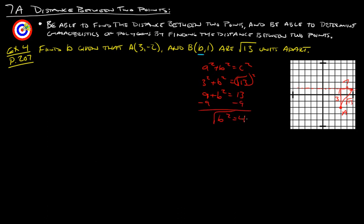Square root both sides and we get B equals plus or minus 2. So this length can be positive 2 or negative 2 from A's x-coordinate. That means B could be in this triangle here or this triangle here. So the x-coordinate of B could equal 1 or 5.